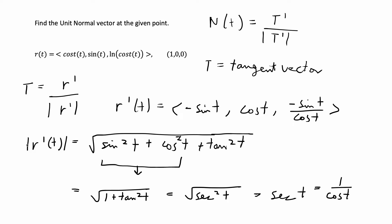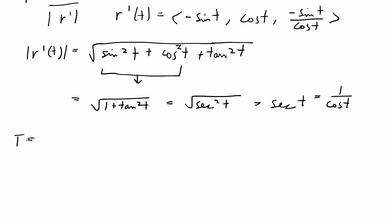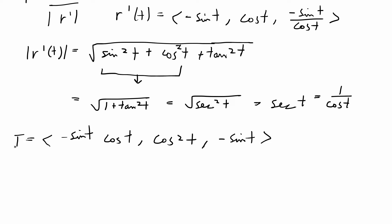Now that we have r' and the magnitude of r', we can plug both into T = r'/|r'|. For the first component, -sin(t) divided by 1/cos(t) gives -sin(t)cos(t). For the second component, we get cos²(t). For the third component, the cosines cancel out, giving -sin(t).